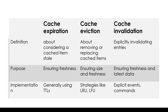Coming to the implementation: cache expiration is generally implemented using timestamps or a TTL property — time to live. Each cache entry would have a timestamp associated with it, and when the TTL is reached, the entry is marked as expired. Subsequent requests for this expired entry will result in a cache miss, which triggers a refresh from the original data source.